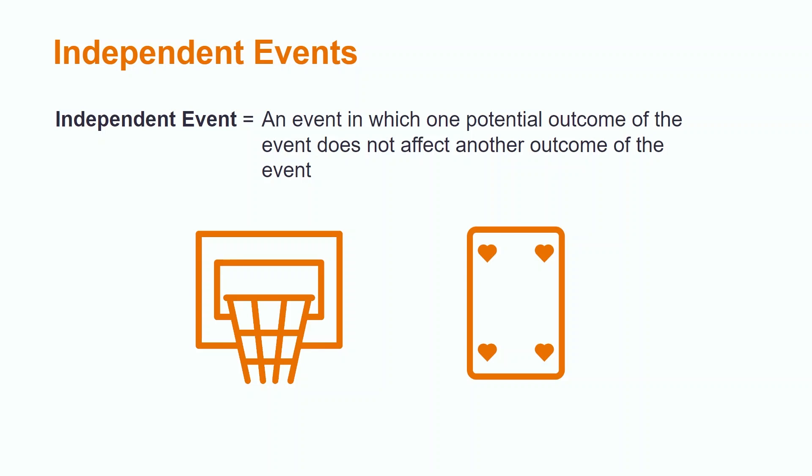This is an example of a dependent event. However, if we were to select a card on the first draw and then put it back in the deck, the events would be independent because we have 52 cards again since the card was replaced.